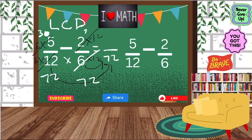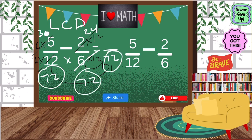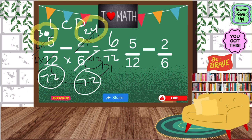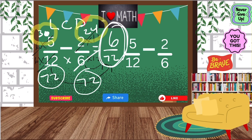Remember, whatever you multiply the bottom by, you have to multiply the top by the same number. Now all of my denominators are 72. At the top, we have 30 minus 24, and 30 minus 24 is 6. So my final answer is 6 over 72. This is one way you can subtract fractions with unlike denominators.